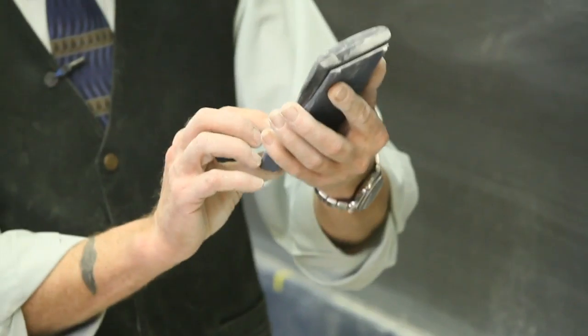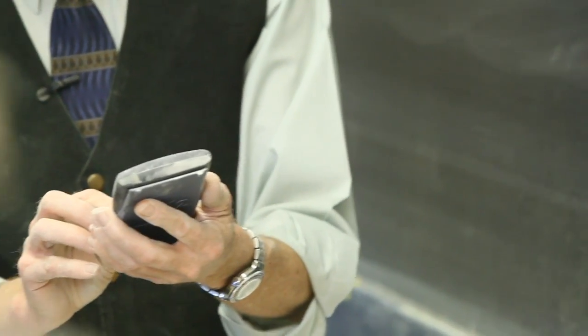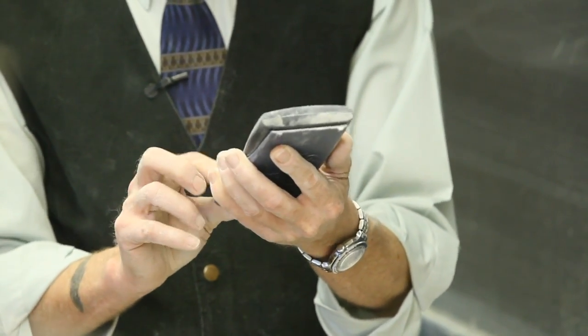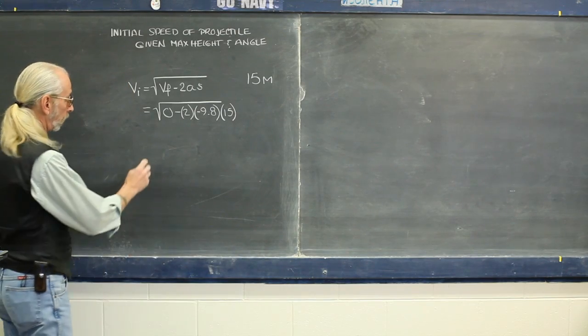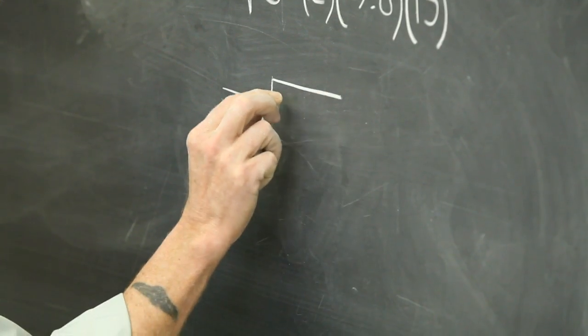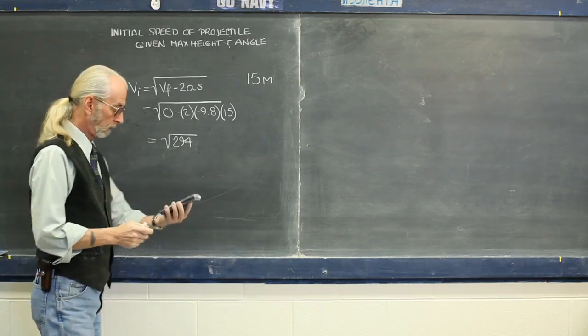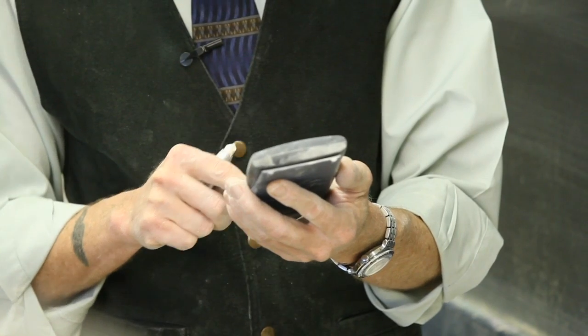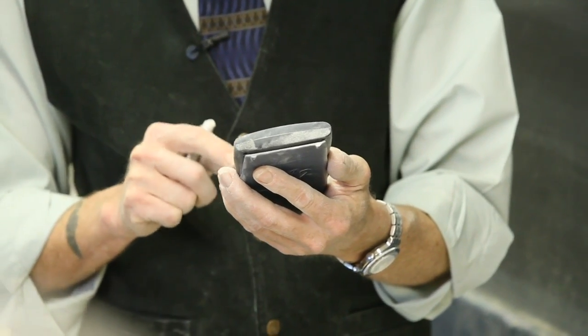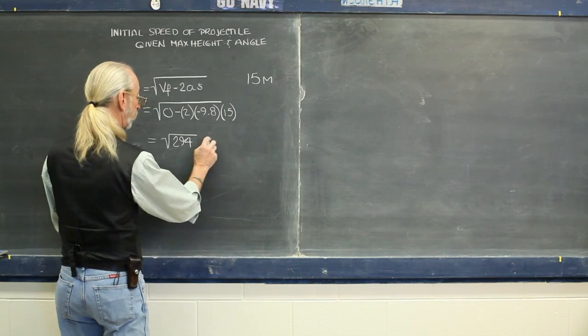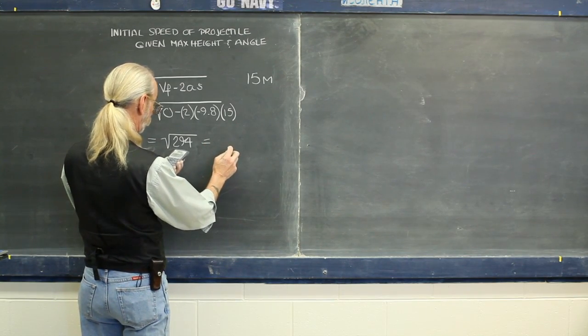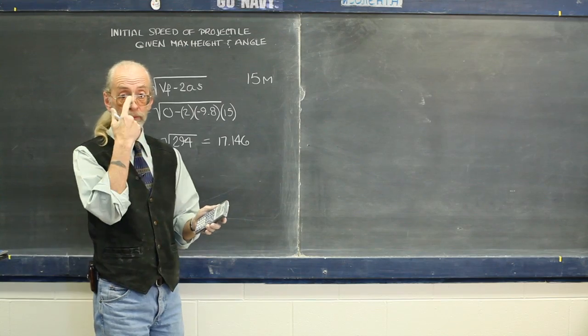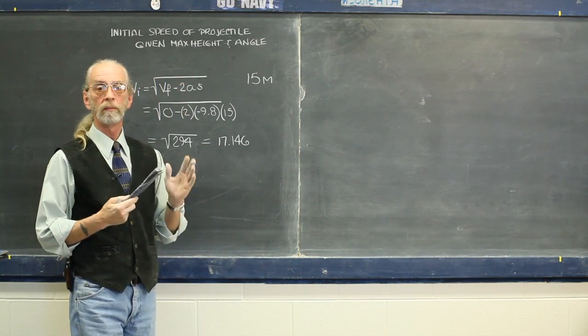So we have negative 2 times a negative 9.8, that makes a positive, so that's 19.6 times 15, 294, equals square root of 294, equals 17.146. And that would be 17.146 meters per second.